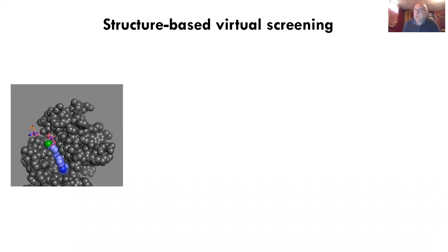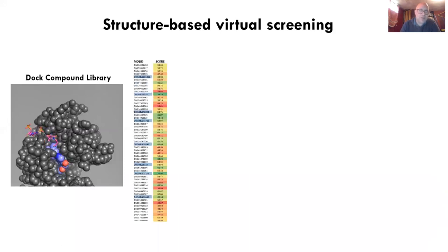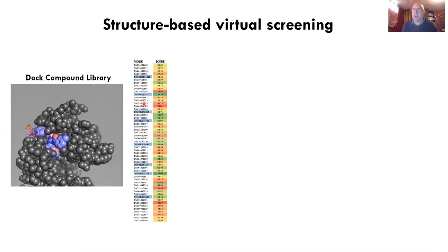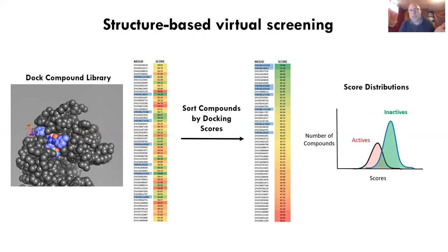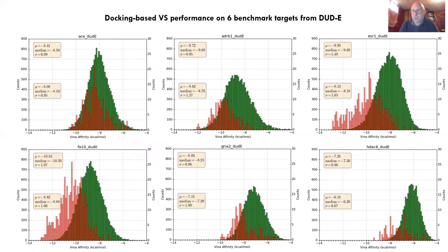Typically we run docking with a static receptor approximation and just fit the molecules in and score them. Here I have molecules listed vertically with their docking scores — the ones highlighted blue are known actives and the others are inactive. We sort the scores and hope to see actives move to the top, so the upper subset will be enriched for actives. In practice, we'd only screen that upper subset — you might have half actives in it, which would be amazing. You want to see the active distribution separate from the inactive compounds.